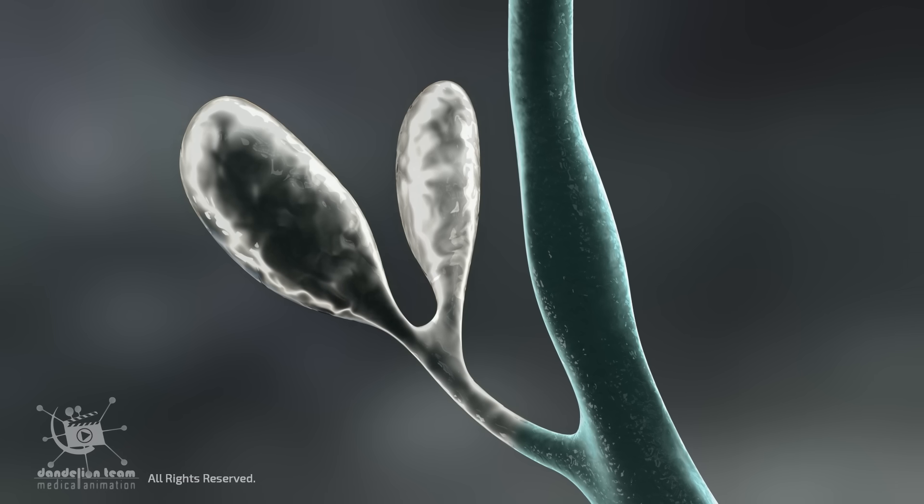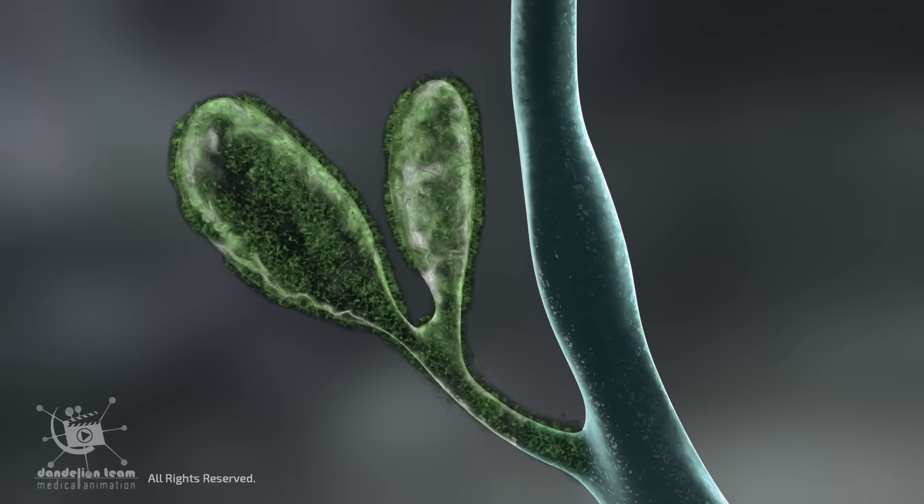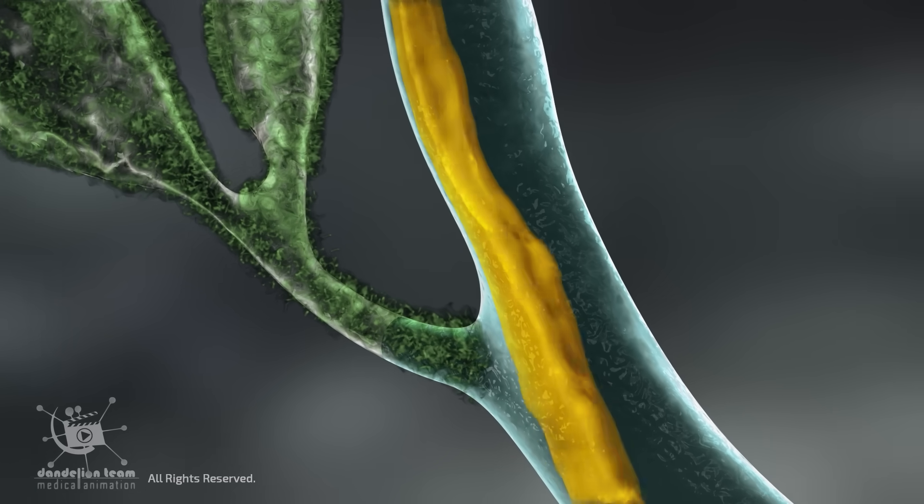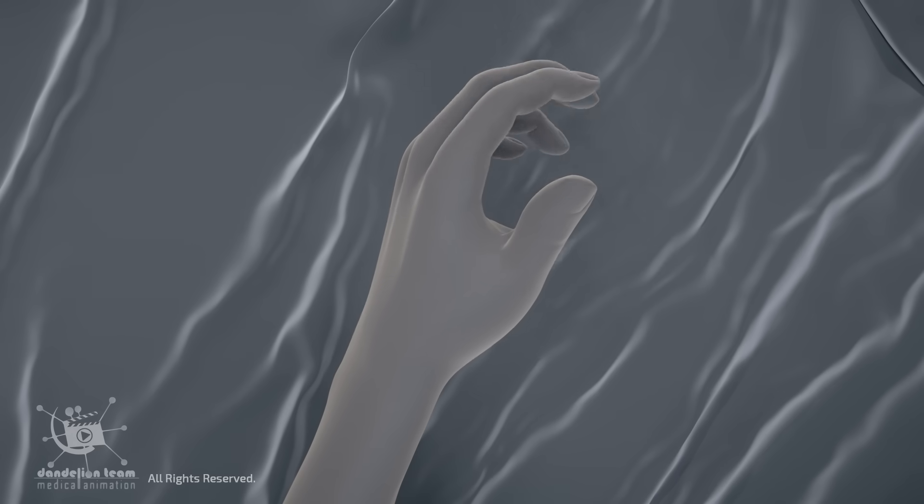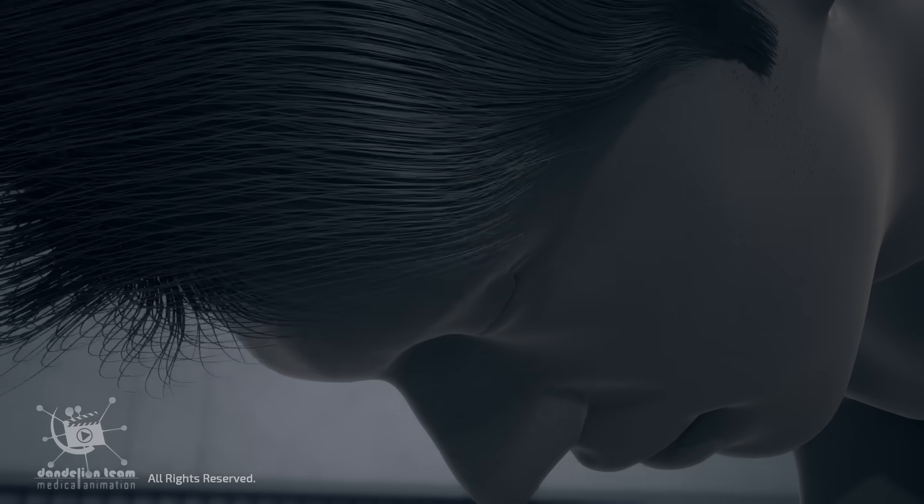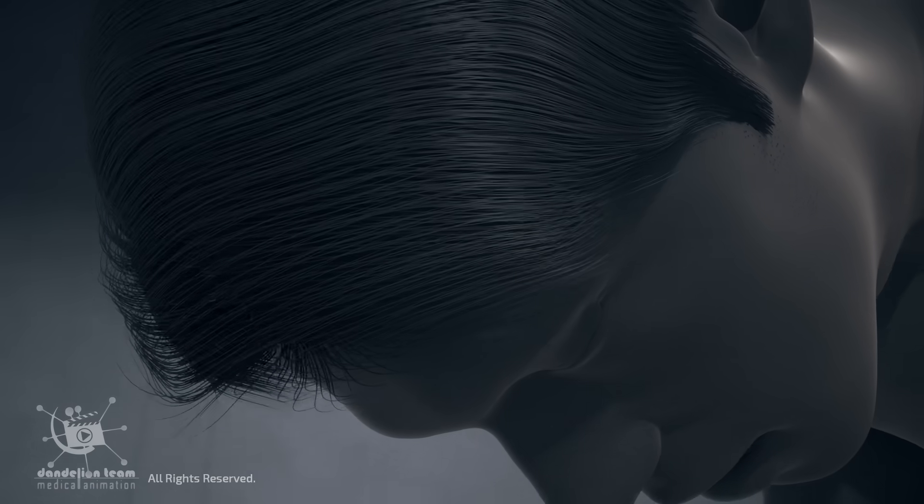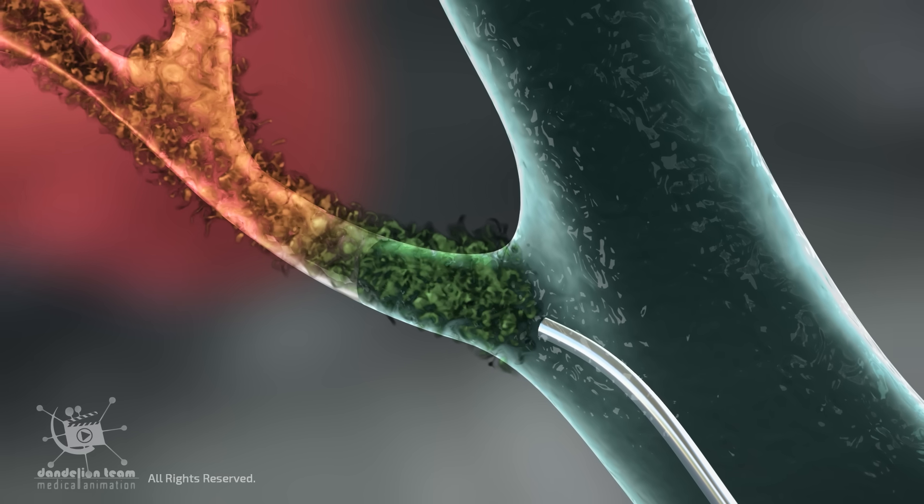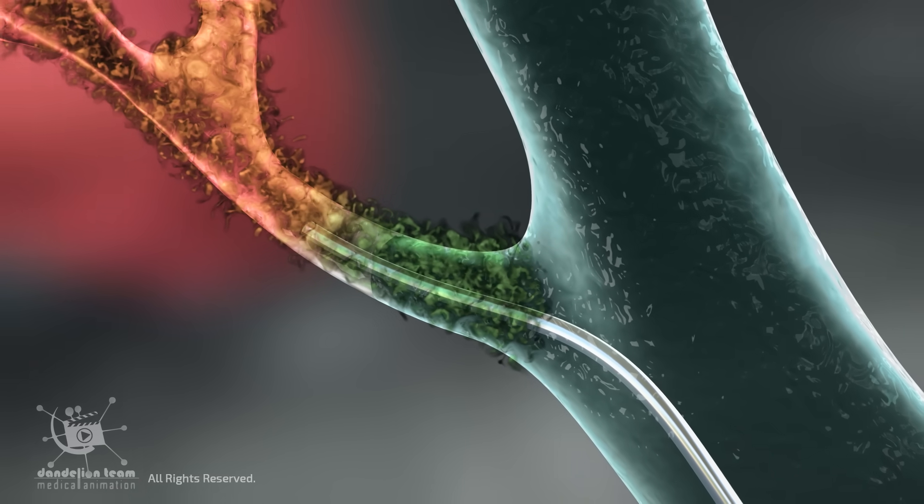In rare cases, the Cowper's glands can become infected, called cowperitis, often due to bacteria from urinary tract infections or STIs, causing pain, swelling, or discomfort during urination or ejaculation. Treatment is done with antibiotics, and in severe cases, an abscess may need to be drained.